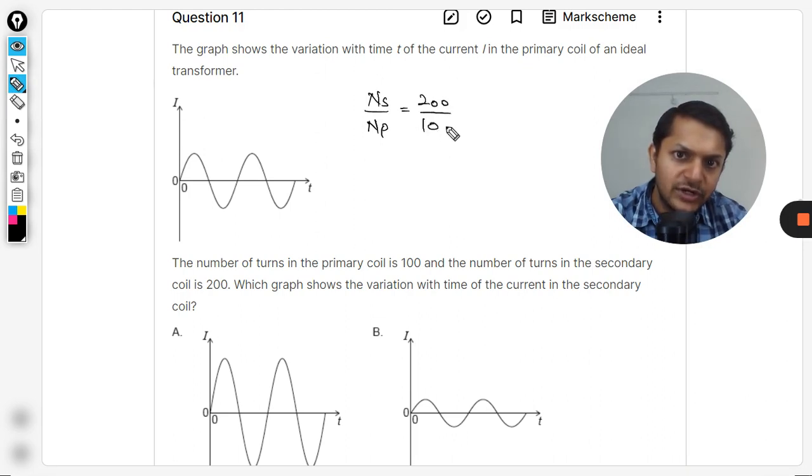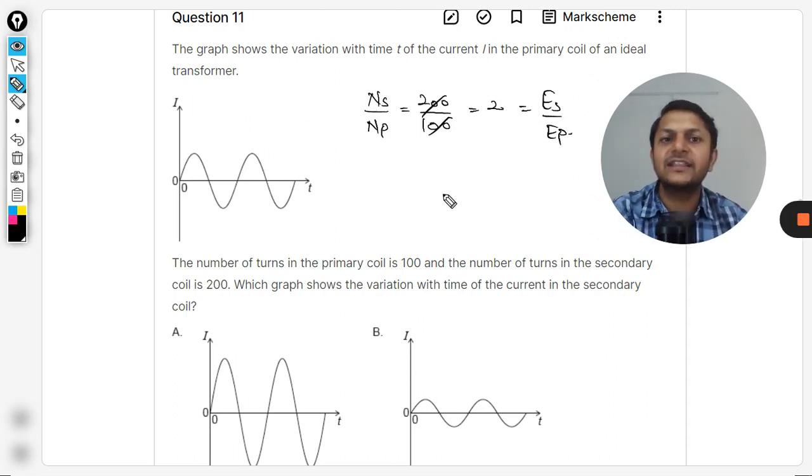...is 200 by 100, that means 2. This means that the voltage is doubled in the secondary coil - you are having double the voltage. Now, which graph shows the variation with time of the current in the secondary coil?